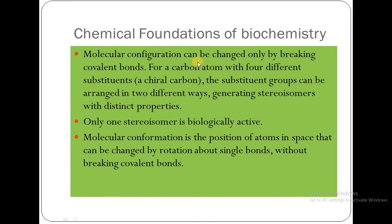Molecular configuration can be changed only by breaking covalent bonds. For a carbon atom with four different substituents, which is called a chiral carbon, the substituents can be arranged in two different ways.